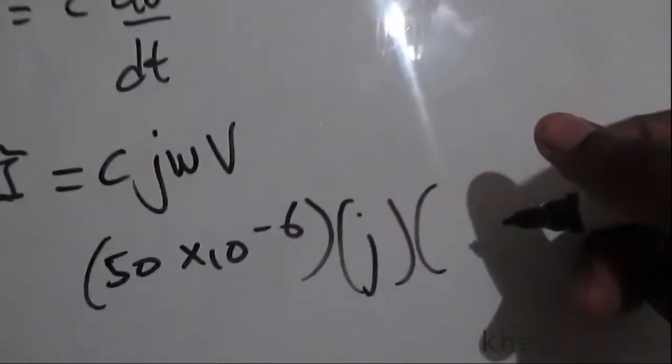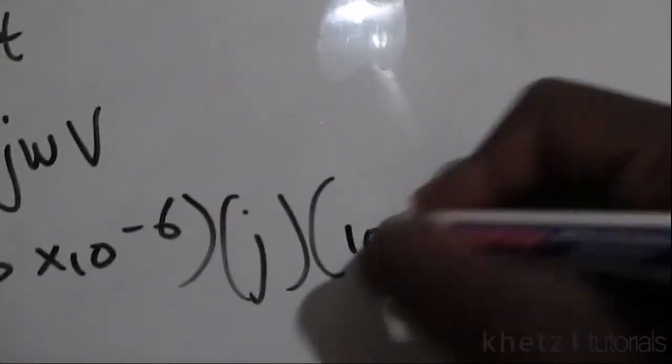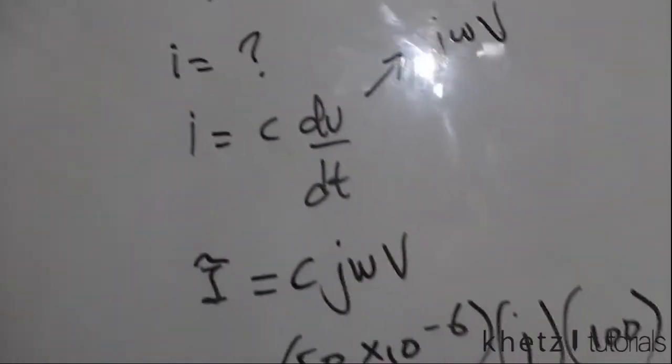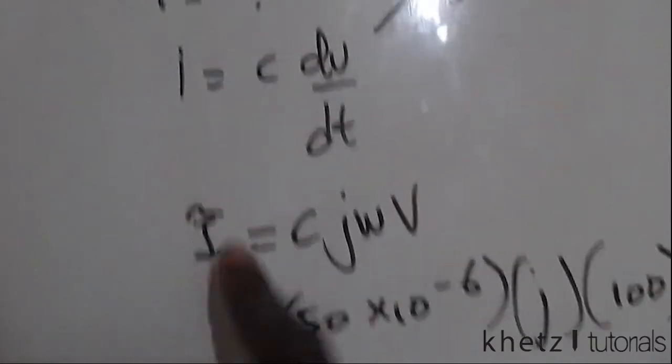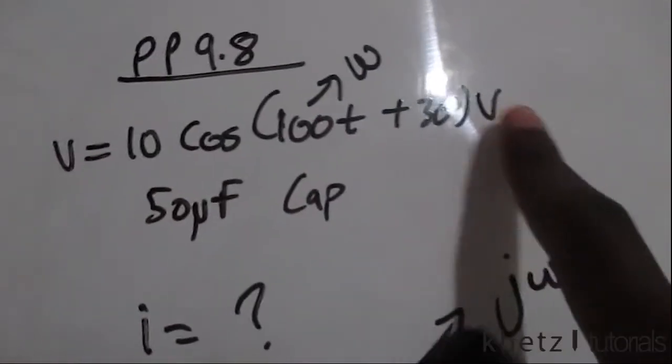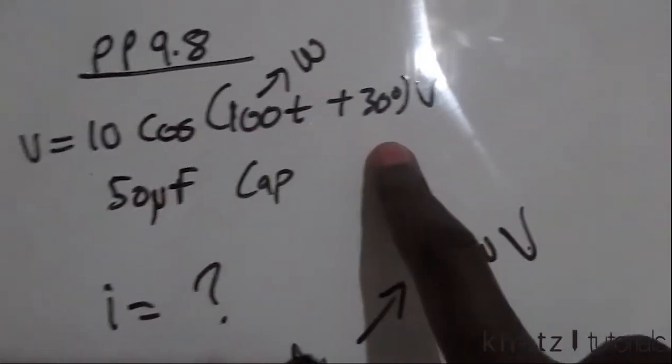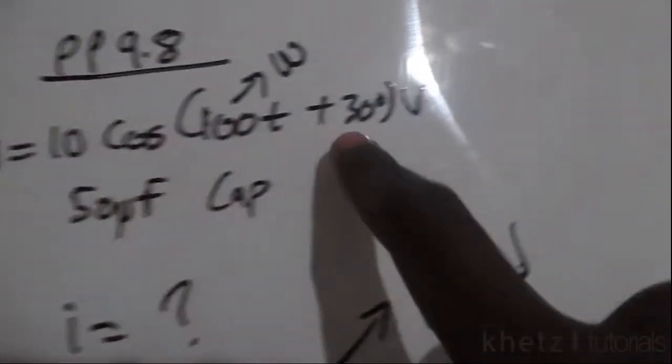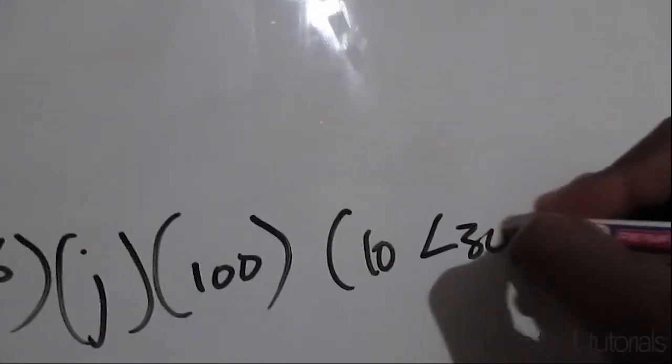We are interested in finding our current, and we're given this voltage in sinusoidal form which you can transform into a phasor with magnitude 10 and phase 30 degrees.